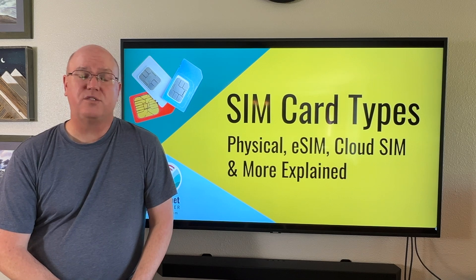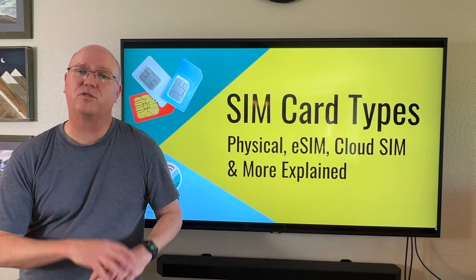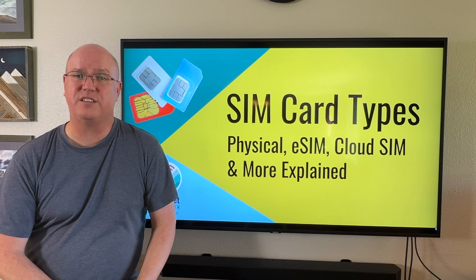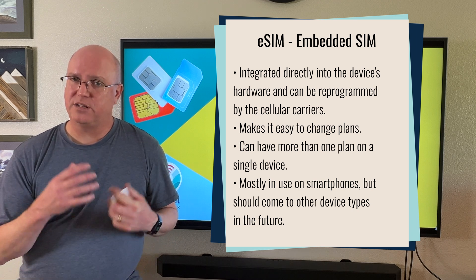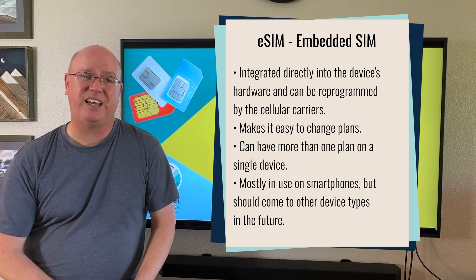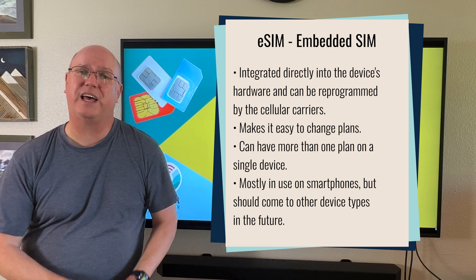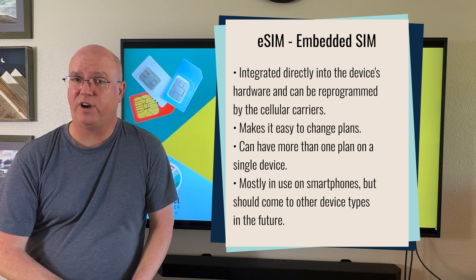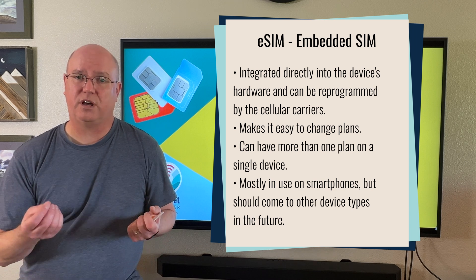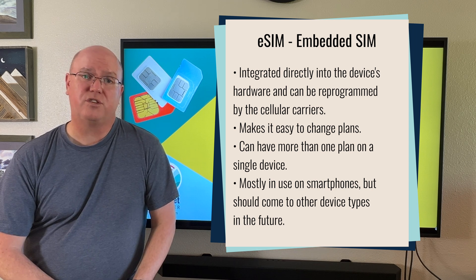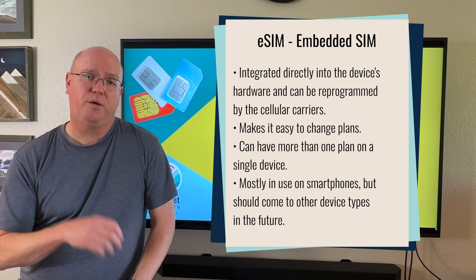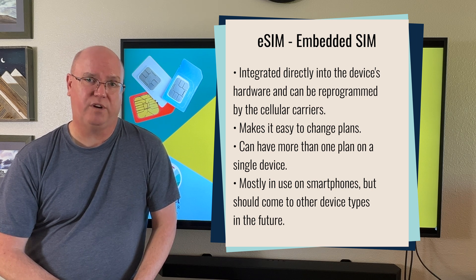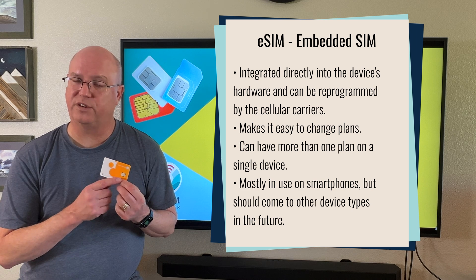Besides physical SIM cards, the second most common way to provide SIM functionality is with eSIM, or embedded SIM. Basically, it takes the SIM card functionality and puts it on a chip on the circuit board of a cellular device, allowing the provider to electronically put the SIM information onto that chip instead of having it on a physical SIM card.